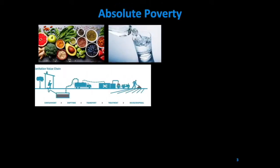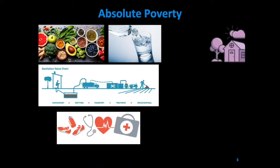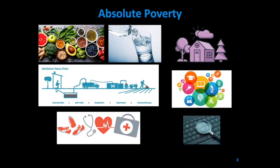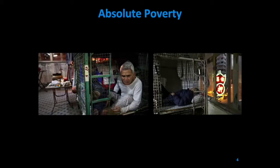According to the United Nations, absolute poverty is characterized by severe deprivation of basic human needs, including food, safe drinking water, sanitation facilities, health, shelter, education, and information. Let's think about cage homes in Hong Kong. In 2013, there was an estimated 171,000 individuals residing in cage homes. Cage homes are often cramped, unsanitary, and generally hazardous to residents, which may expose residents to disease and pathogens.